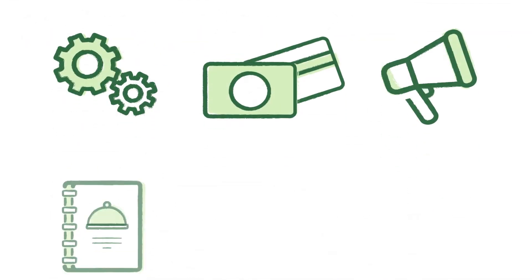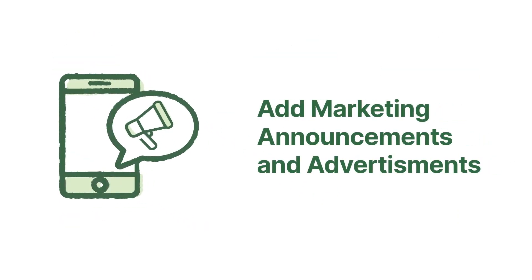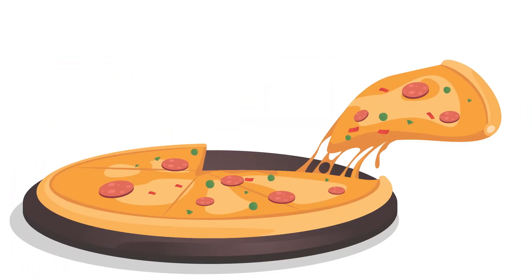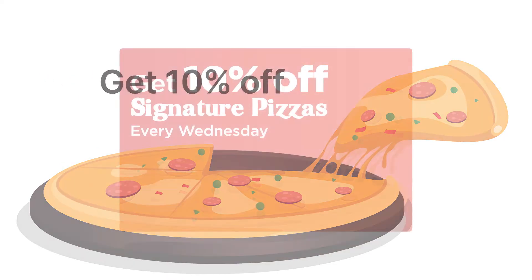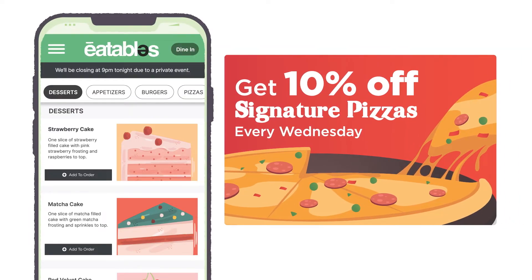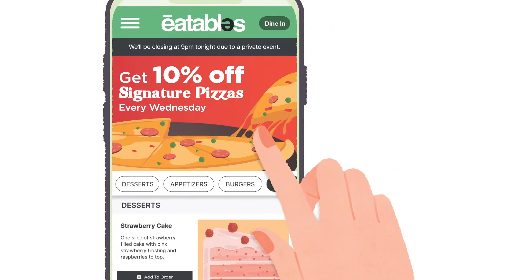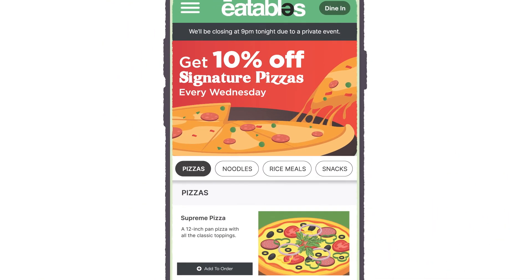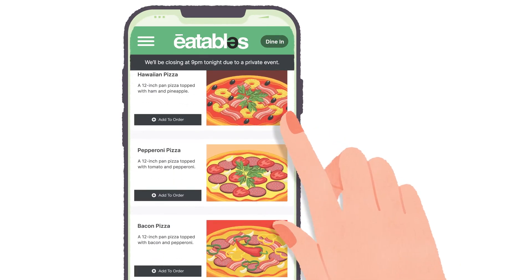Now we can promote our menu. Let's add marketing announcements and advertisements. Introducing a new menu item or a special offer? Promote it with a beautiful banner displayed across the top of your customer's screens. When a customer clicks it, it goes directly to the item or category. It's a great way to attract attention and drive sales.